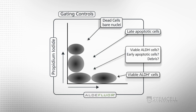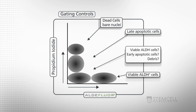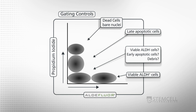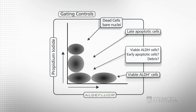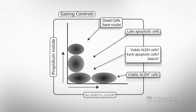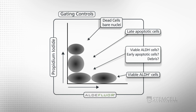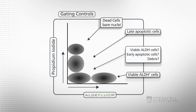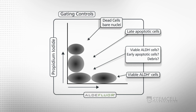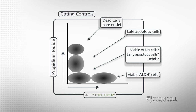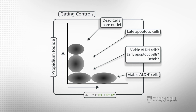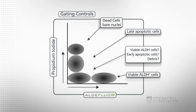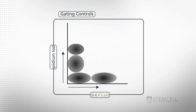When staining a population with heterogeneous ALDH expression, it is important to determine whether the differences in fluorescence intensity are caused by differences in ALDH activity in viable cells or by the presence of dead or apoptotic cells in the sample.